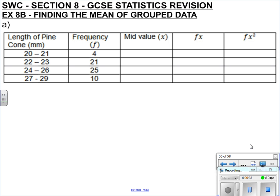When you've got grouped data like this, first off this is discontinuous grouped data, because it goes from 21 to 22. The length of pinecone has been rounded to the nearest millimetre, so we need to account for upper and lower bounds. Our bounds need to be changed: 19.5 to 21.5, 21.5 to 23.5, 23.5 to 26.5, and 26.5 to 29.5 — that now covers all the possibilities.